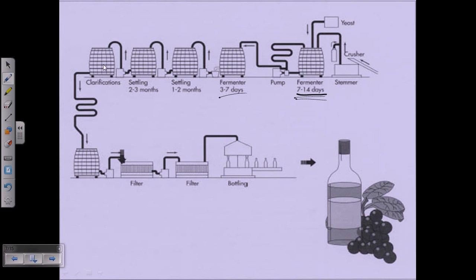Then settling, again clarification, after the clarification filtration, finally the bottling. If we don't need to go through the aging, but if we want aging, we put them in the aging part at this particular stage.